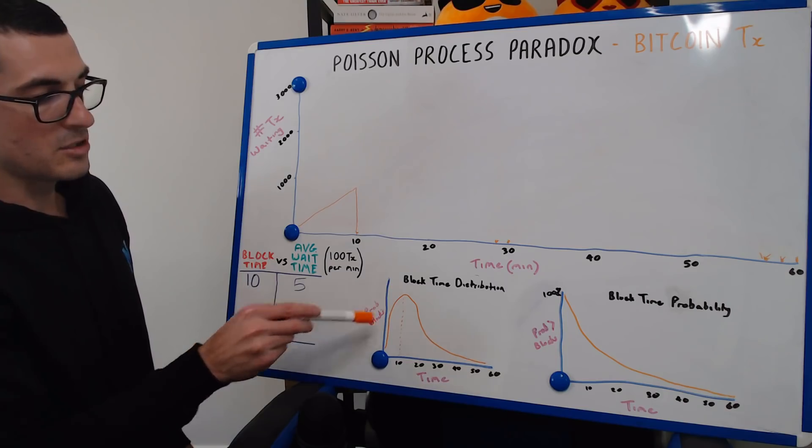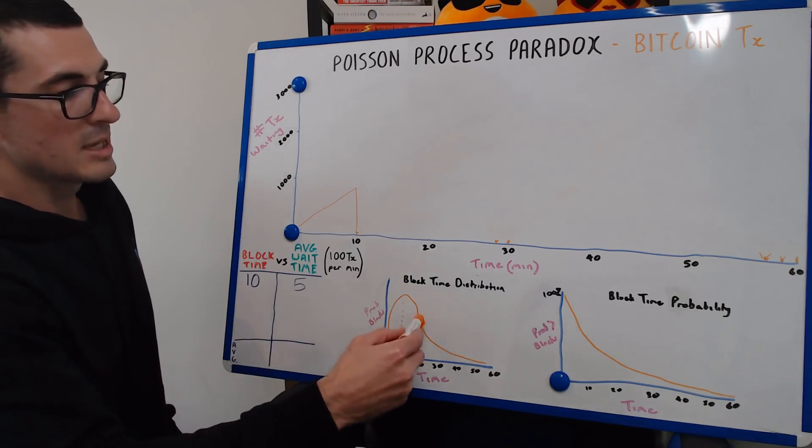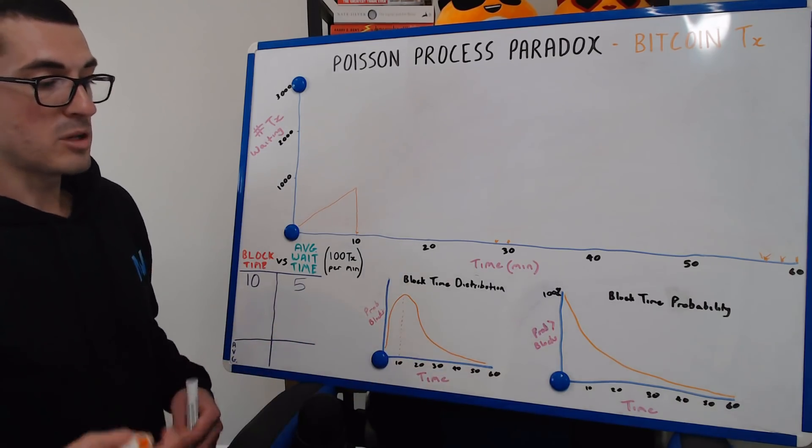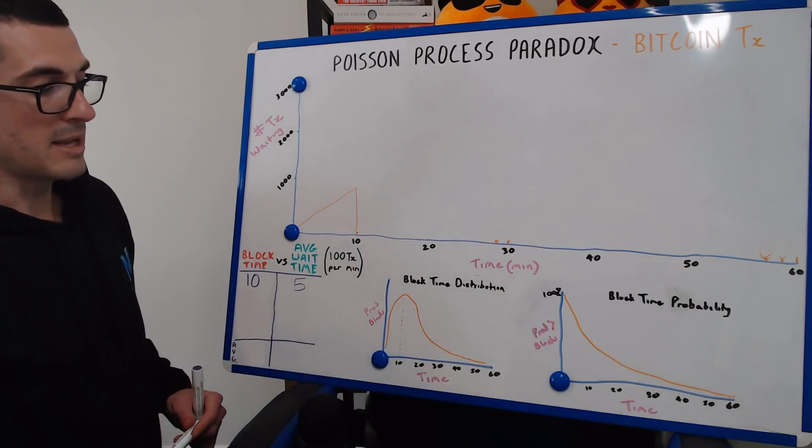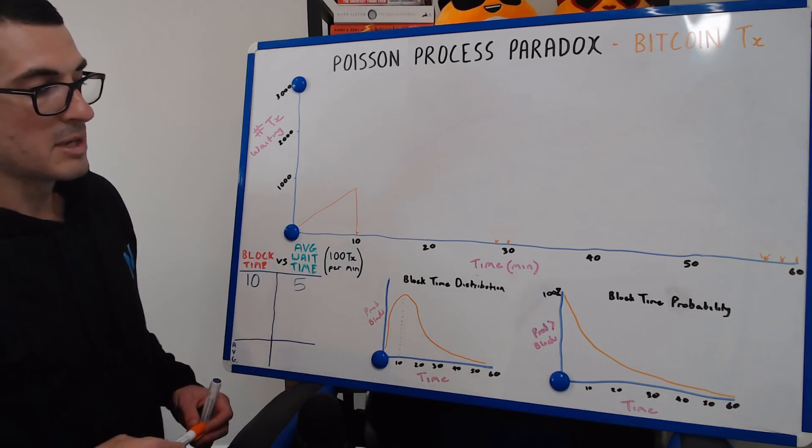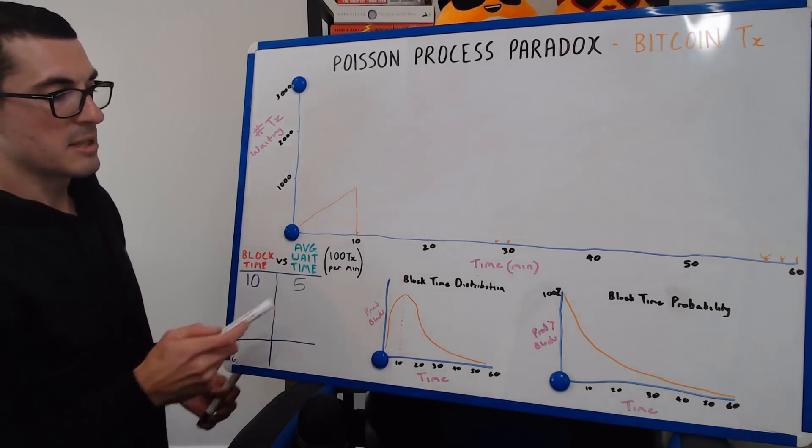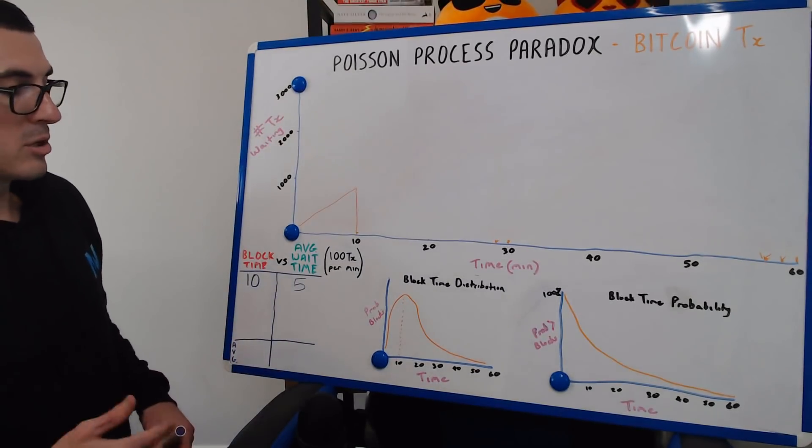So it doesn't have the tail out to the left like a normal standard distribution. We have this tail out to the right, because we can have blocks that take longer, like we just spoke about. But the average still works out to be 10 minutes as that block time. We see the majority are sort of clustered around that 10-minute mark, the probability of a block time there.